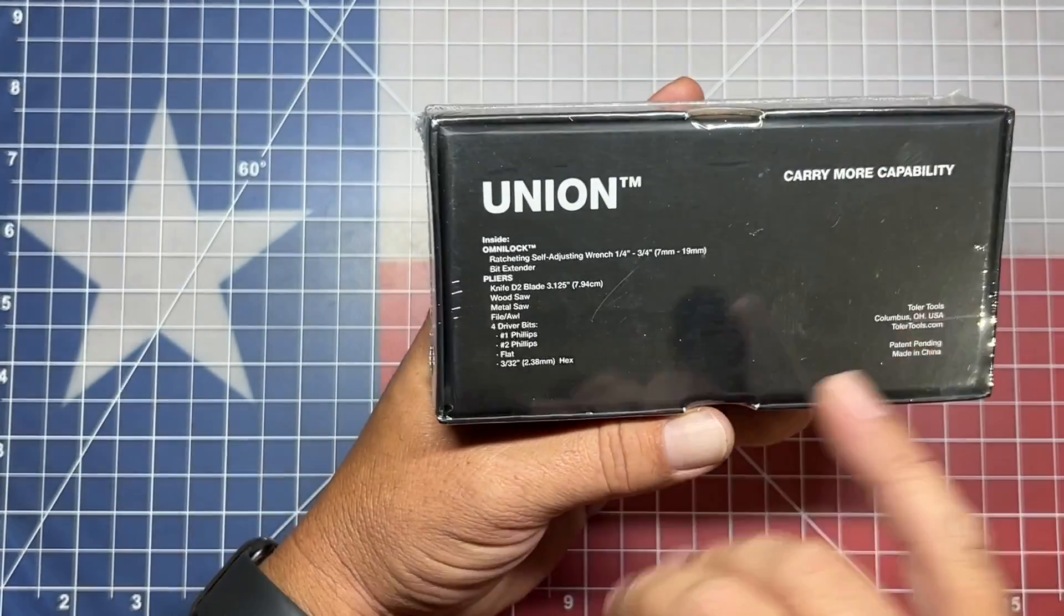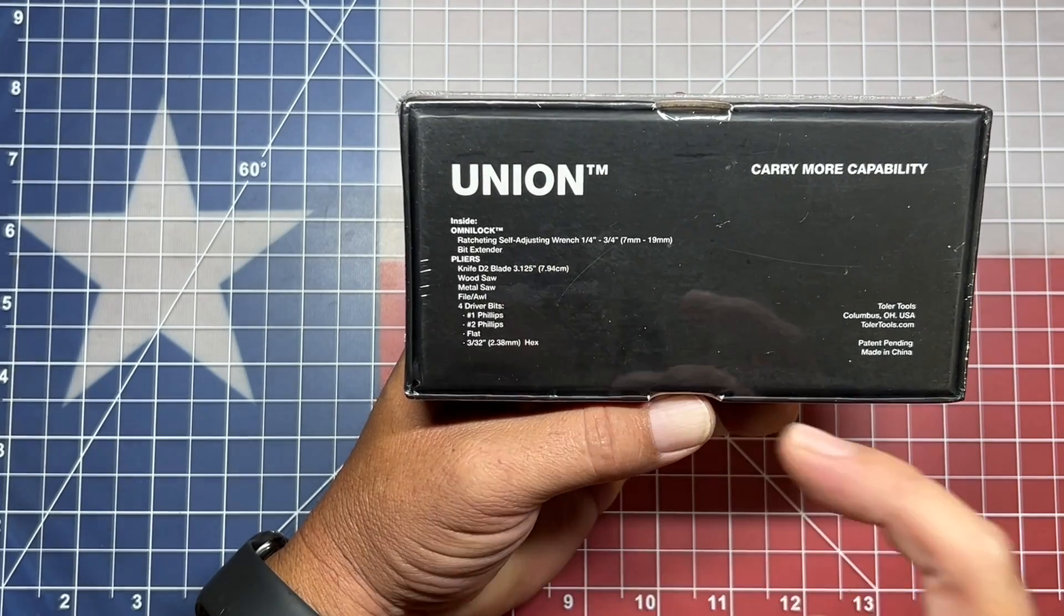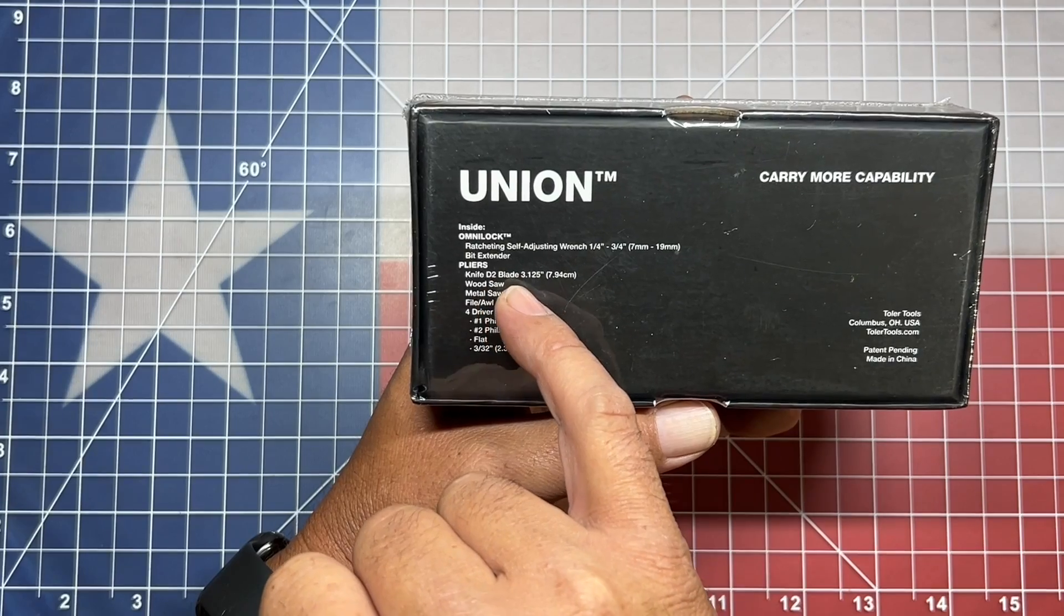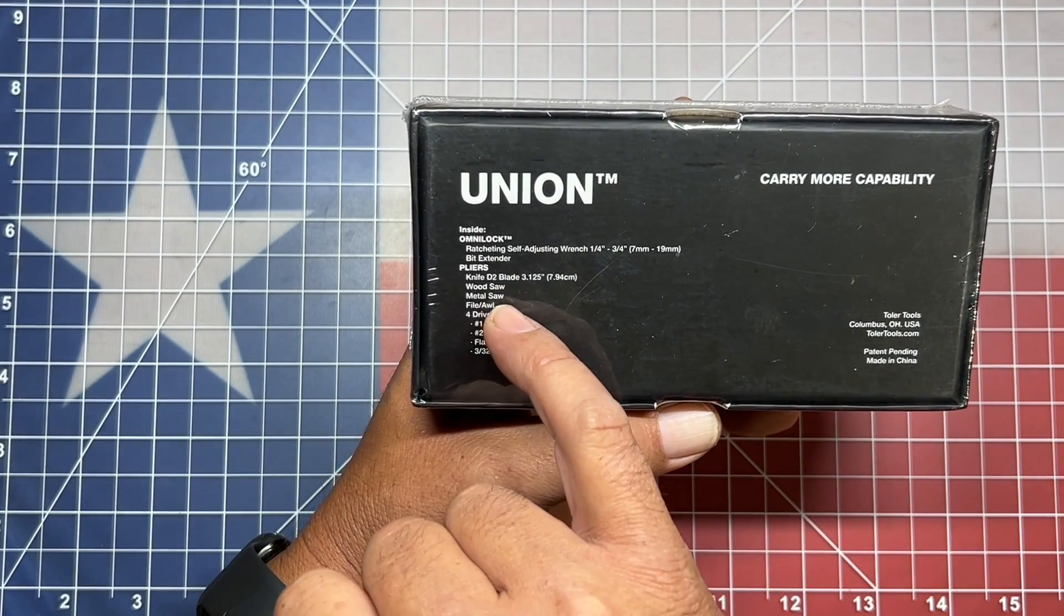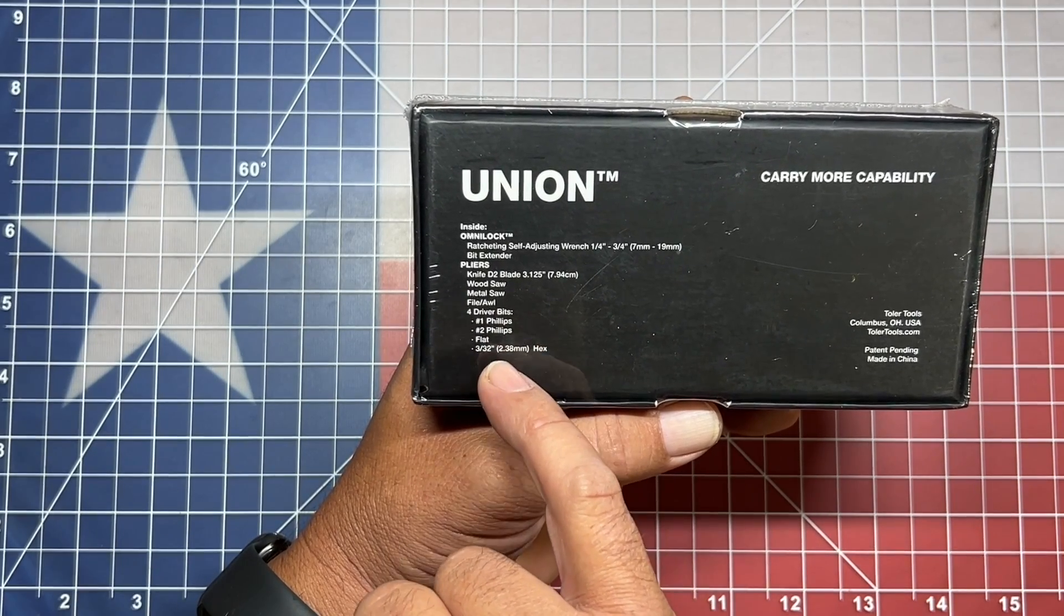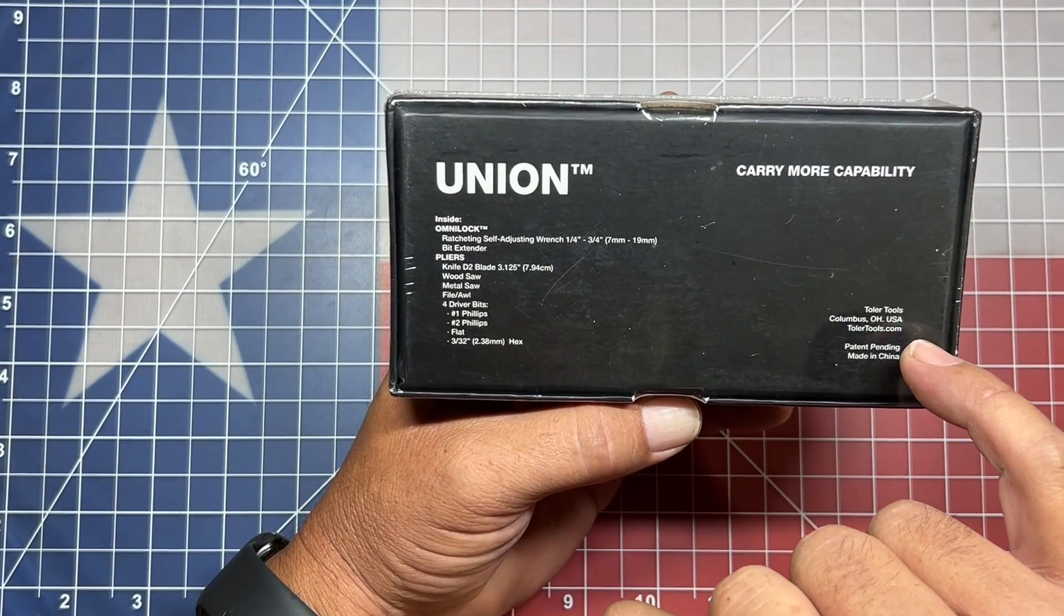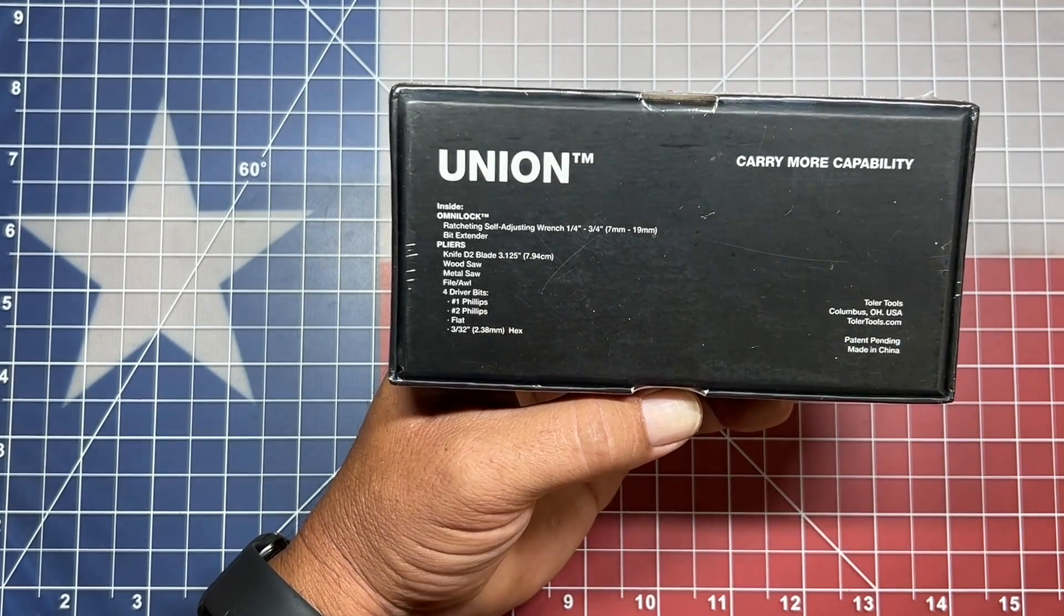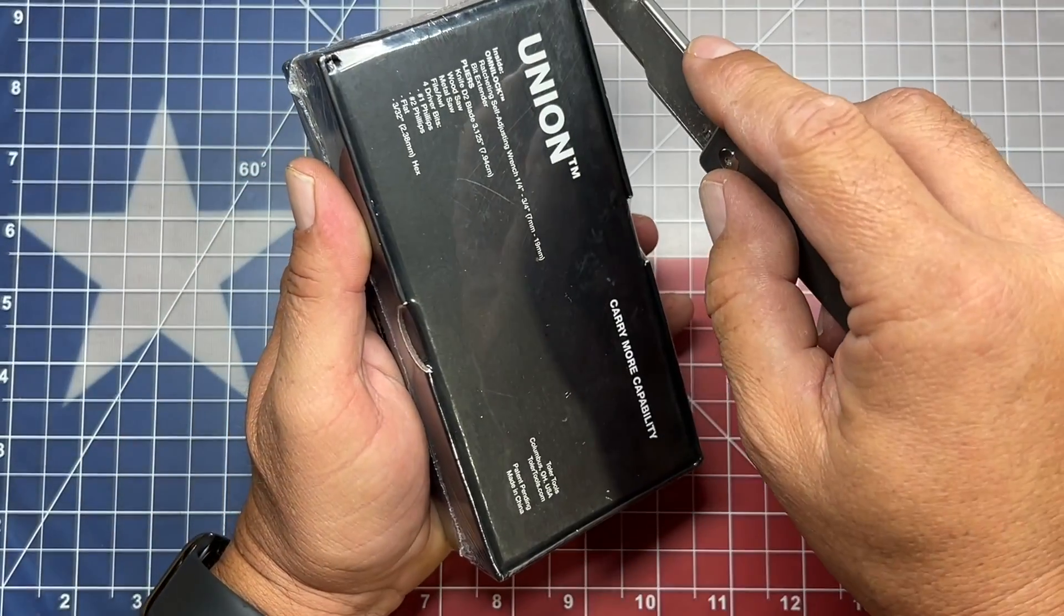First, let's look on the back. It says Union OmniLock with ratcheting self-adjusting wrench from quarter to three quarter or seven to nineteen millimeter. A bit extender, pliers, knife with a D2 three and one eighth inch blade or 7.94 centimeters, wood saw, metal saw, file, all four bit driver bits including number one, number two Phillips, a flat and a 332 hex. This is designed by Toler Tools in Columbus, Ohio and manufactured in China. Let's get this baby opened up and see what we've got.